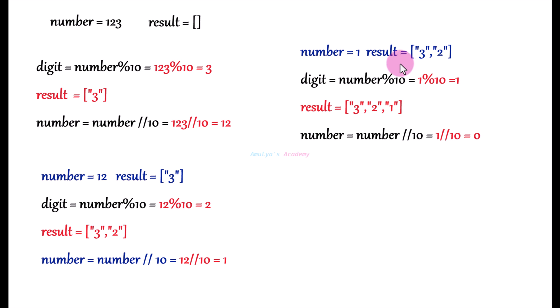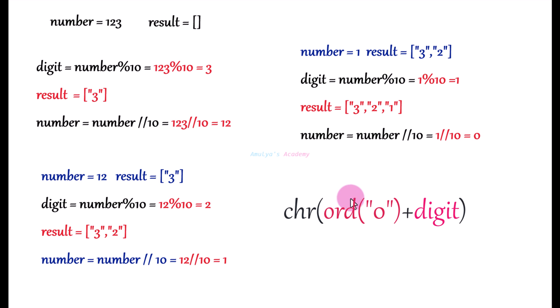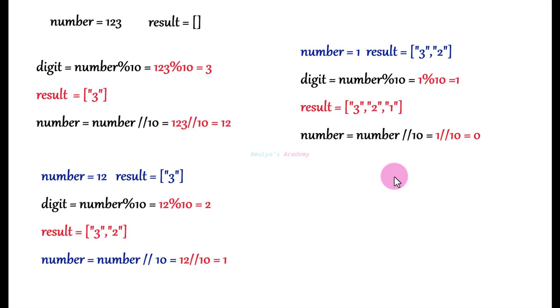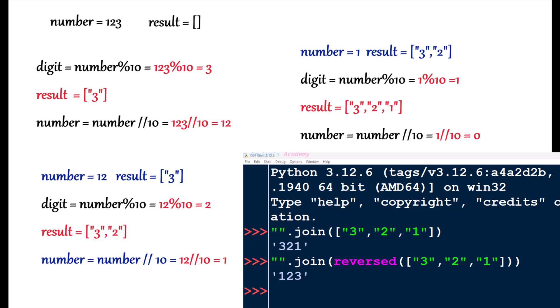For the next calculation number is 1 and the list contains characters '3' and '2'. We perform modulo again to get the last digit, convert it to a character, then append it to the result. We then perform division and get 0 — at that point we stop. We continue this loop while number is greater than 0; when we reach 0 we stop. Now the result list contains characters '3', '2', '1'. We use the join method to combine them, but first we need to reverse the list, then join to get the correct output.